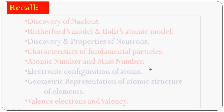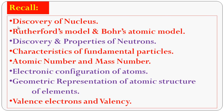Now let us recall what we learnt in the previous classes: Discovery of Nucleus, Rutherford Model and Bohr Atom Model, Discovery and Properties of Neutrons, Characteristics of Fundamental Particles, Atomic Number and Mass Number, Electronic Configuration of Atoms, Geometric Representation of Atomic Structure of Some Elements, then Valence Electrons and Valency.